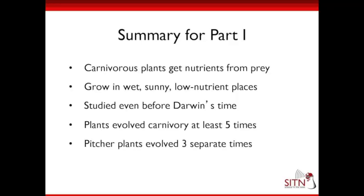Summary for this first section: carnivorous plants get their nutrients from prey and grow in wet, sunny, low-nutrient places such as bogs. They were studied even before Darwin's time, and initially people didn't believe they were actually carnivores. Plants have evolved carnivory at least five, maybe six or seven times, and the pitcher plant shape has evolved separately three times.